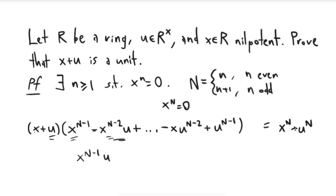Sorry, x to the n plus u to the n. But we know that x to the n is 0, so this is just equal to u to the n.